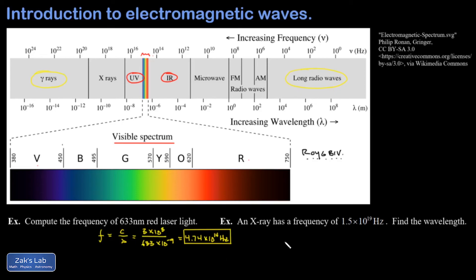In the second example, we have an x-ray. So part of my motivation here is just to point out that x-rays are a type of electromagnetic wave, and it has a frequency of 1.5 times 10 to the 19 hertz, and I want the wavelength. So I do the familiar calculation, lambda C over F, and I get a wavelength of 2 times 10 to the negative 11 meters.